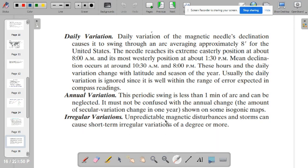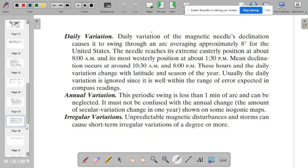Irregular variation, these are unpredictable magnetic disturbances and storms, which can cause short-term irregular variations of a degree or more.